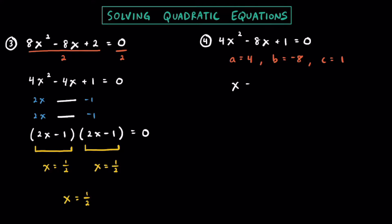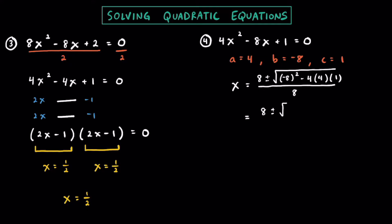So we have x equals the opposite of b. The opposite of negative 8 is going to be a positive 8, plus or minus the square root of b squared — that's negative 8 squared — minus 4ac, so minus 4 times a which is 4 times c which is 1. This whole thing is going to be all over 2a or 2 times 4, which I'll just write as 8. Simplifying this down, we have 8 plus or minus the square root of 64 minus 16, which is 48, all over 8.